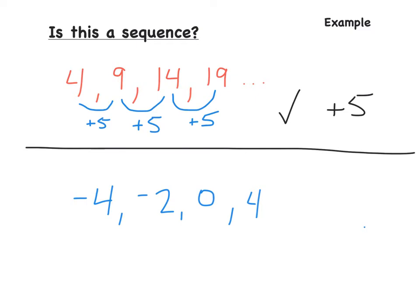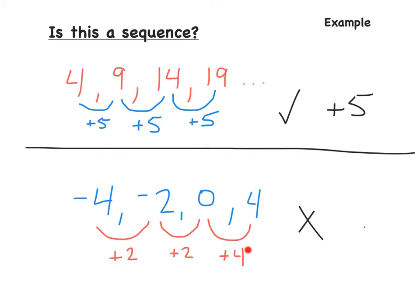Pause the video and try the one at the bottom, then unpause when you're ready. We have to find the common difference between every term. From negative 4 to negative 2, you're adding 2; negative 2 to 0, add 2; but from 0 to 4, you have to add 4. This is not an arithmetic sequence because the differences are add 2, add 2, add 4 — all three would have to be the same.